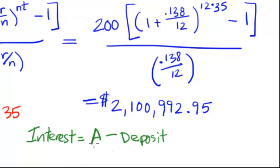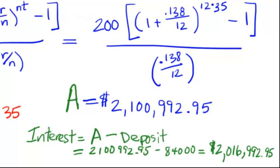So the interest that this account earns is always going to be the final value amount - that's this A that we calculated earlier, a little over $2 million - minus the deposit, how much we put in.